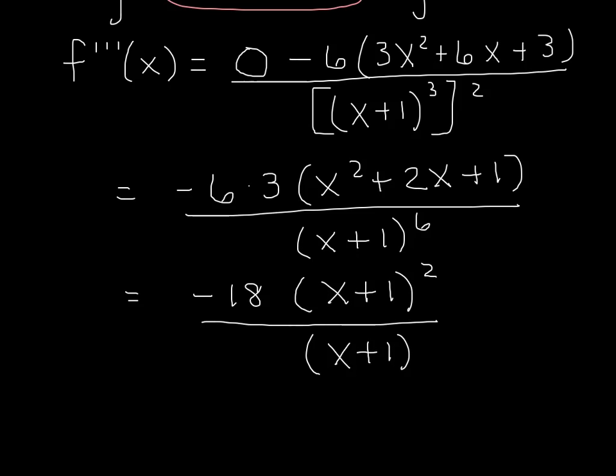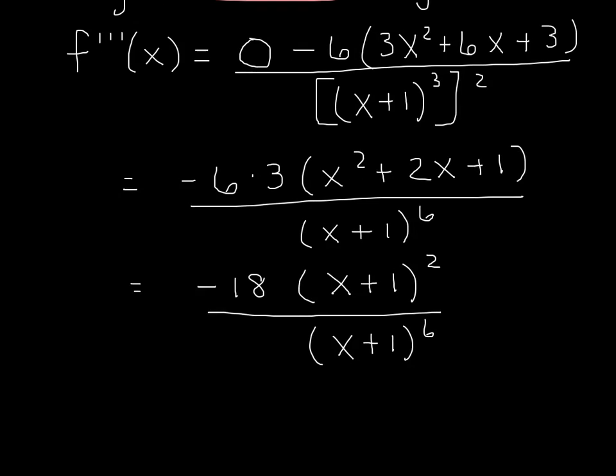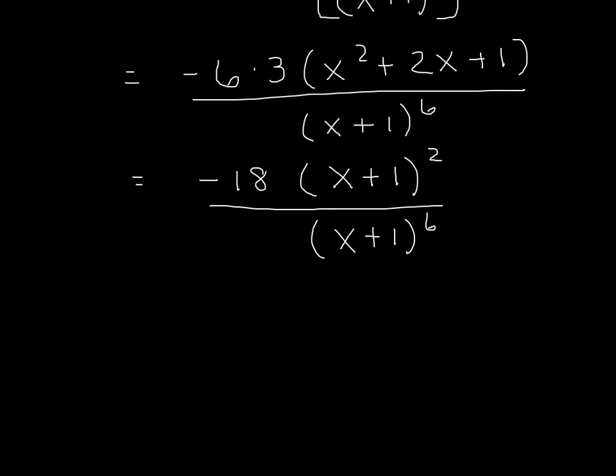And we have x plus 1 to the sixth in the denominator, so we have common factors. We can divide out two from the numerator with the sixth in the denominator, leaving four in the denominator. And that's going to give us our third derivative of negative 18 in the numerator, divided by x plus 1 to the fourth power in the denominator. That was quite an interesting problem.